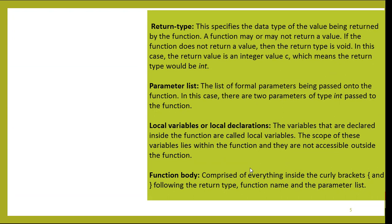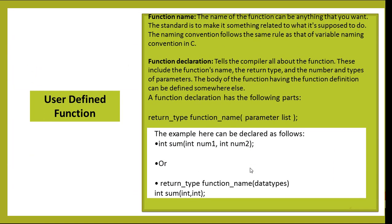The function body comprises everything inside the curly brackets — opening and closing curly brackets — following the return type, function name, and parameter list. The name of the function can be anything you want. The standard is to make it something related to what it is supposed to do. The naming conventions follow the same rules as variable naming conventions in C.